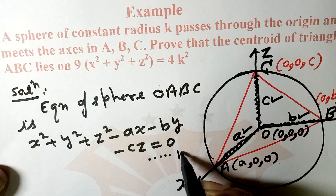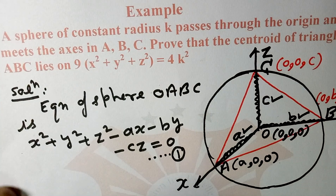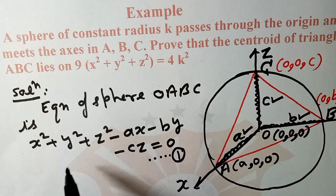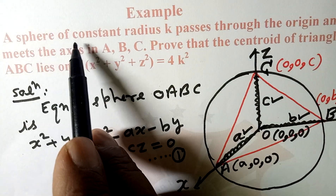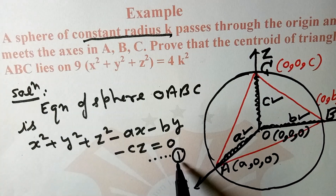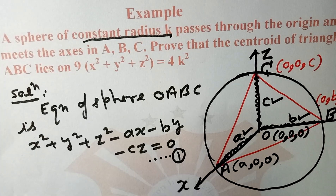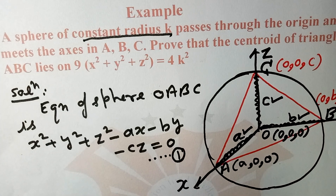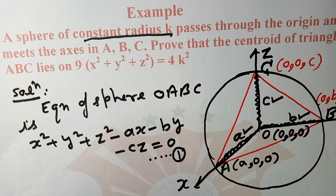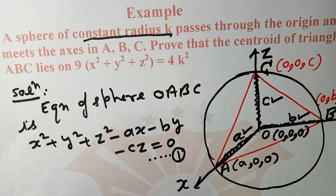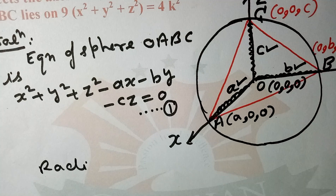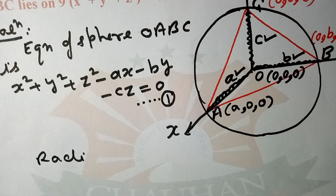For its proof, please refer to the previous lecture. Now this sphere has constant radius k. So its radius — the question says it is k. Let us find the radius.